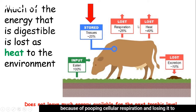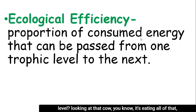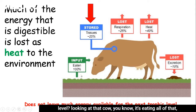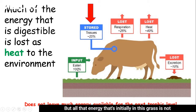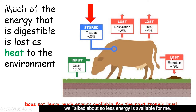That really does not leave much energy available for the next trophic level, because of pooping, cellular respiration, and losing energy due to body heat. This is looking at ecological efficiency — out of all the energy that an organism consumes, how much is actually going to be available to the next trophic level? Looking at that cow eating grass, all of that energy initially in the grass is not going to be available to us if we eat that cow as a steak. Because along the way, that cow has lost a lot of its stored energy. So less energy is available if I eat that cow versus if I ate the plant directly.